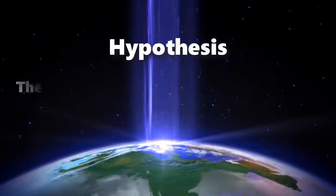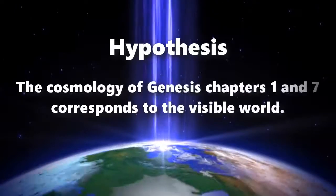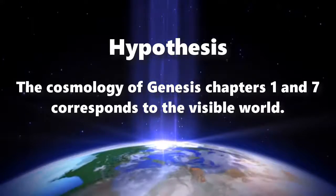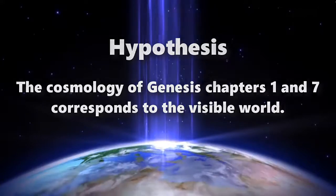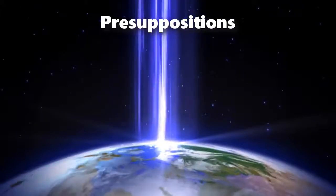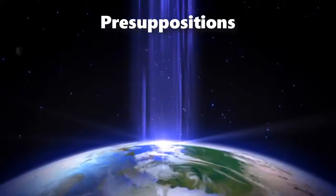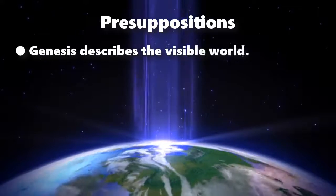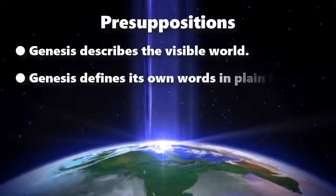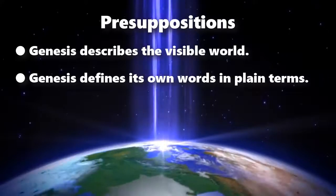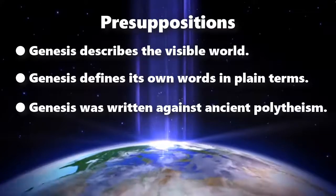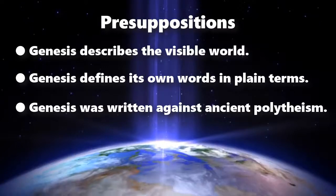Hypothesis: The cosmology of Genesis, Chapters 1 and 7, corresponds to the visible world. Presuppositions underlying this video: Genesis describes the visible world; Genesis defines its own words in plain terms; and Genesis was written against ancient polytheism.